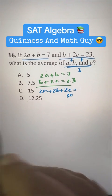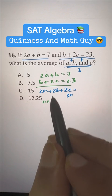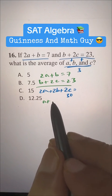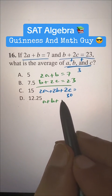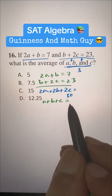Now, divide the entire equation by 2. 2A divided by 2 will be A, 2B divided by 2 will be B, plus 2C divided by 2 will be C is equal to 30 divided by 2 will be 15.